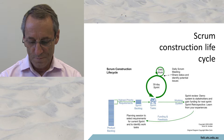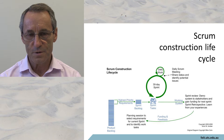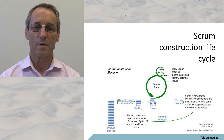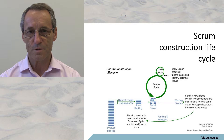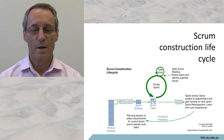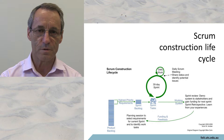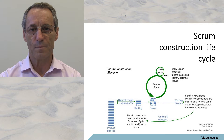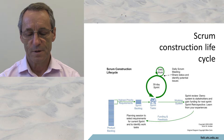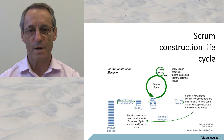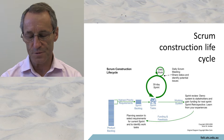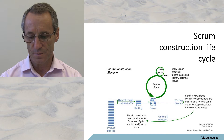In the Scrum construction lifecycle, user stories are collected into the backlog. They're prioritized so that the highest priority user stories are at the top of the stack. A number of user stories are pitched into the Scrum for a particular sprint. The developer picks one off the top of the stack, goes and talks to the user, and starts implementing the story.